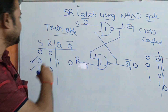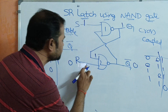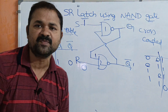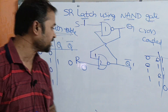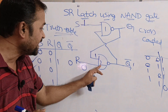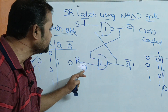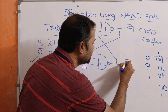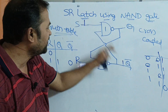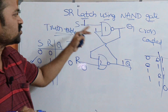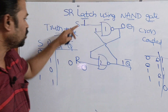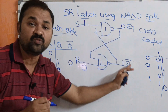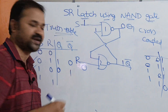Now let us focus on S=1, R=0. Here the second NAND gate is accepting R=0 as input. If one of the inputs is 0, then the output is 1. So the second NAND gate produces 1 as the output. This 1 is passed as input to the first NAND gate, so inputs to the first NAND gate are 1 and 1, giving output 0. So when S=1, R=0: Q=0 and Q bar=1. These two are complemented to each other.